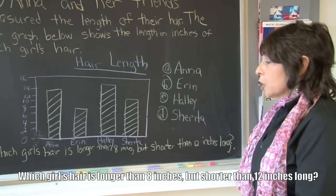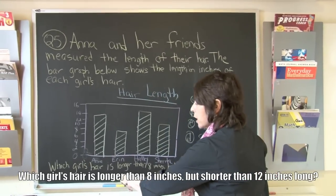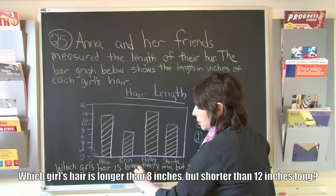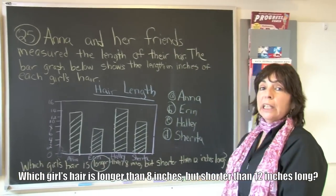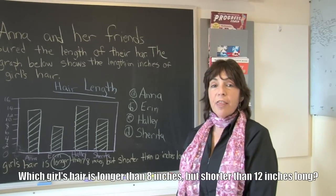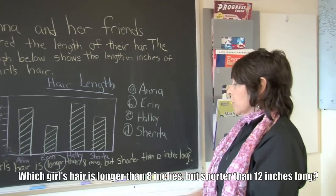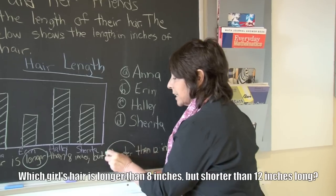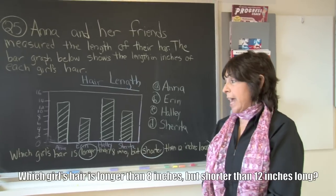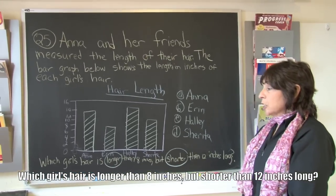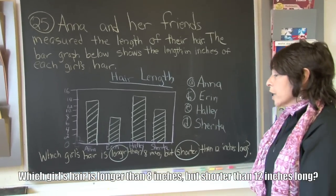One of the first things we need to know is that 'longer' means more, so we need a number that is more than eight inches. We also need to know that 'shorter' means less — a number smaller than eight inches. So we need a number that is more than eight and less than twelve.